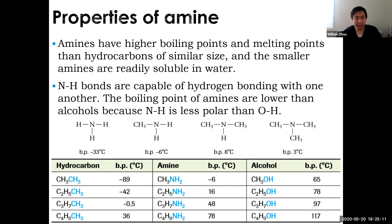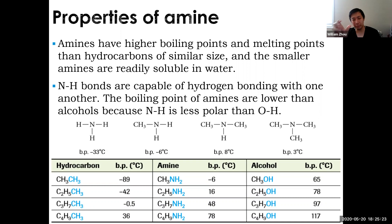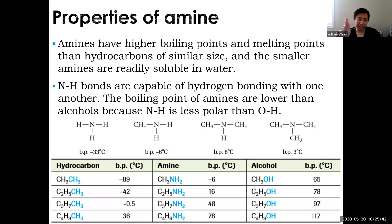Why did the boiling point increase? You are still able to do hydrogen bonding - you still have N-H bonds - but now you have an additional methyl group giving more electrons, so stronger London forces. The stronger London force increased the boiling point. This pattern continues with a secondary amine, where the boiling point jumps to positive 8°C: still hydrogen bonding with the N-H, but having more electrons means stronger London forces.